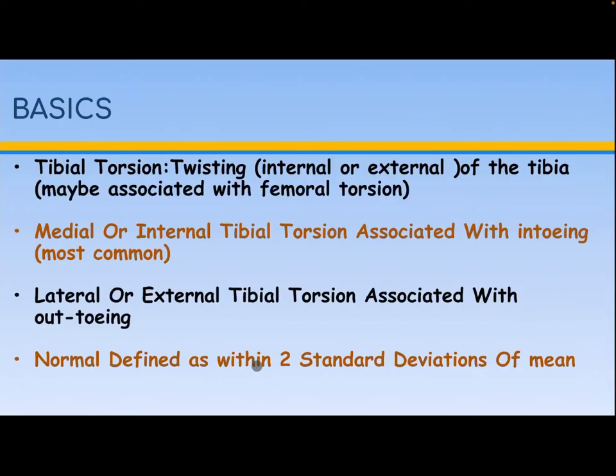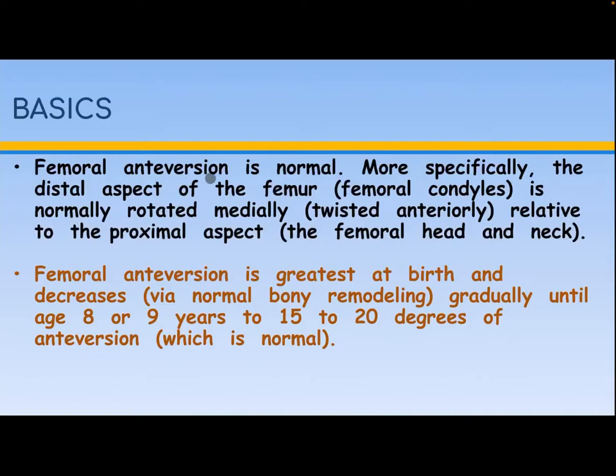Femoral anteversion is normal. More specifically, the distal aspect of the femur — the femoral condyle — is normally rotated medially and twisted anteriorly relative to the proximal aspect, the femoral head and neck. Femoral anteversion is greatest at birth and decreases via normal bony remodeling gradually until age 8 or 9 years, to 15 to 20 degrees of anteversion, which is normal.